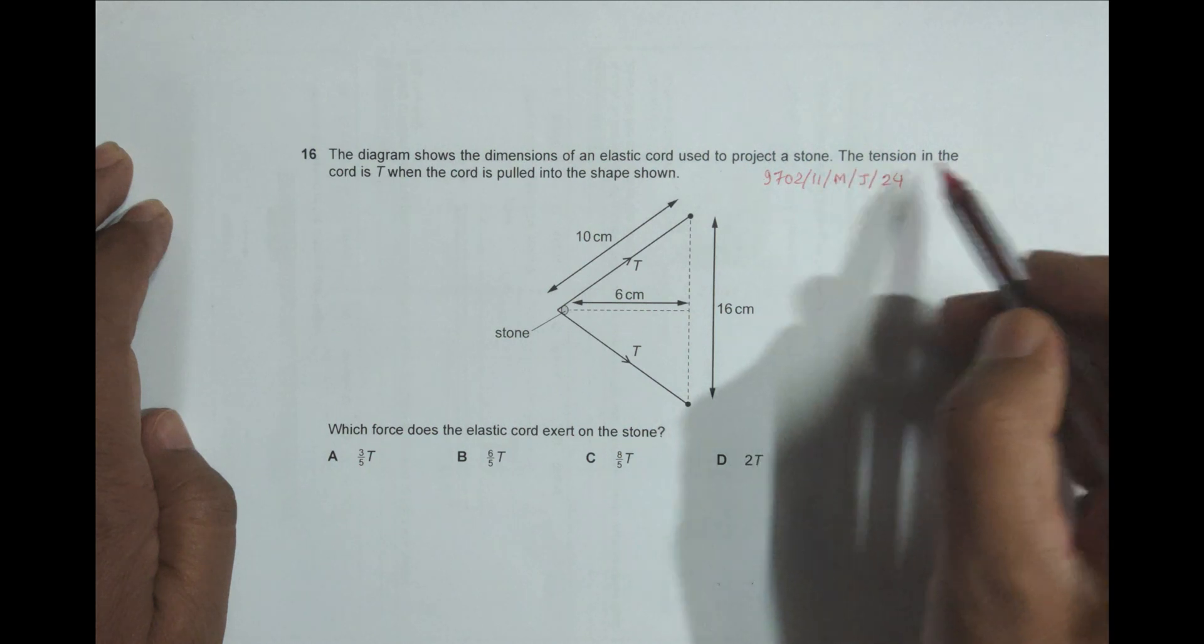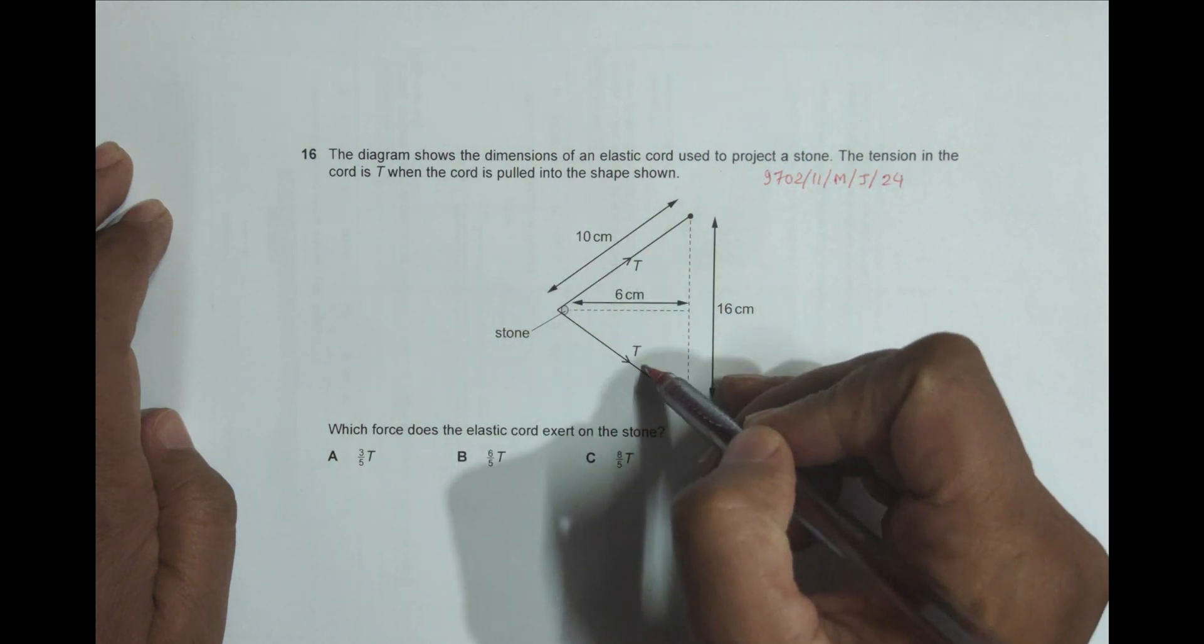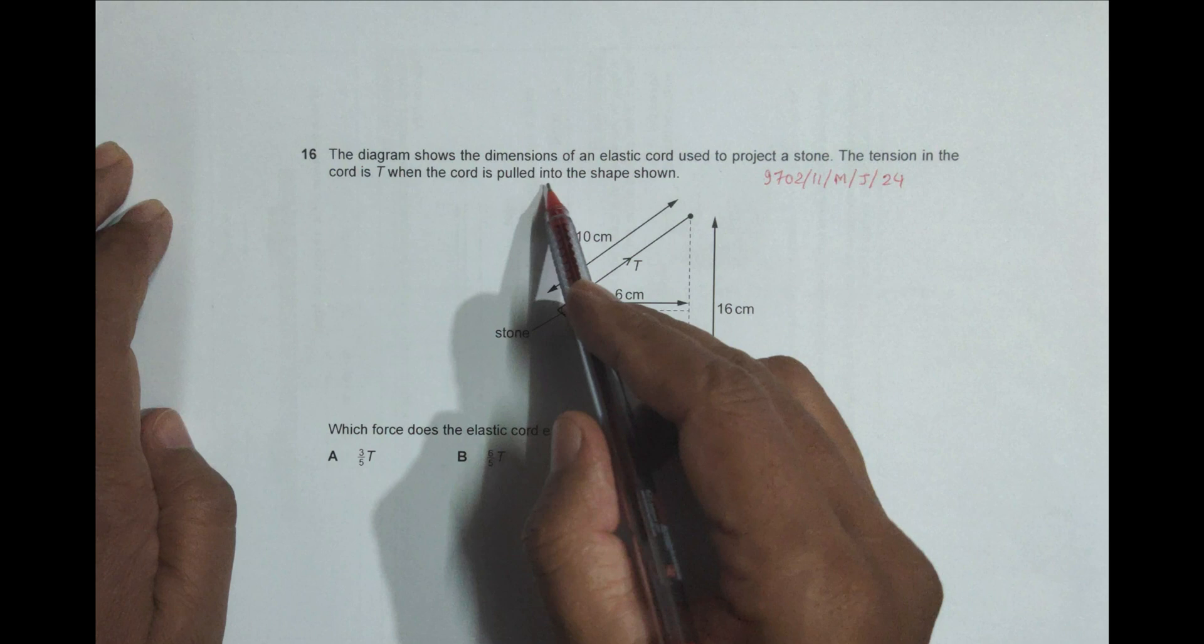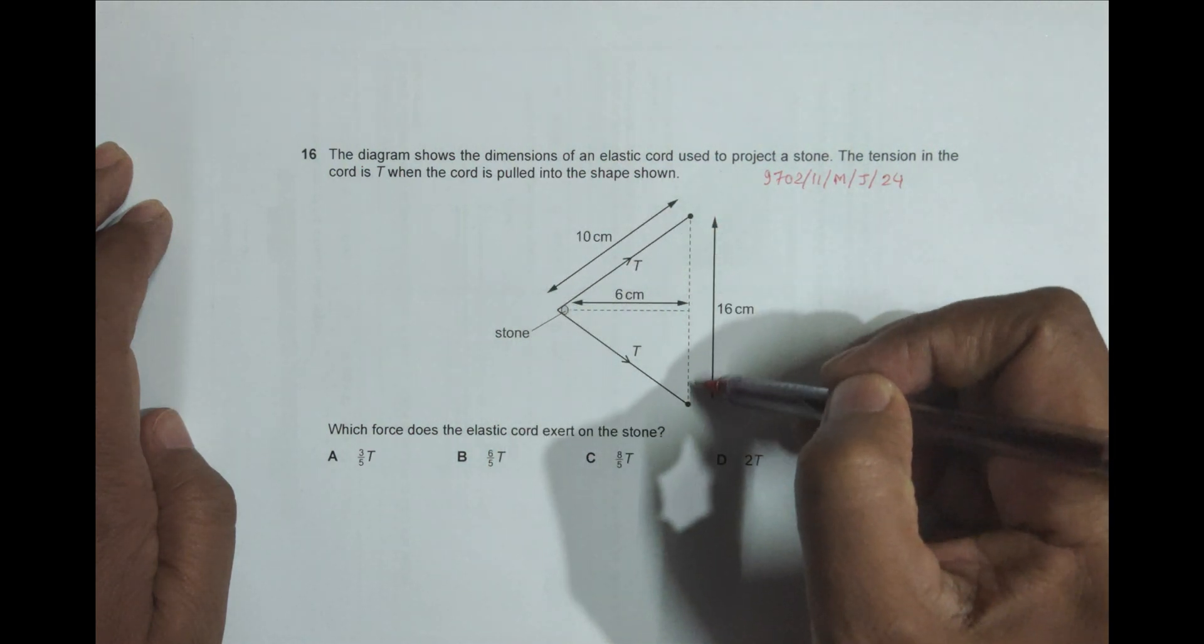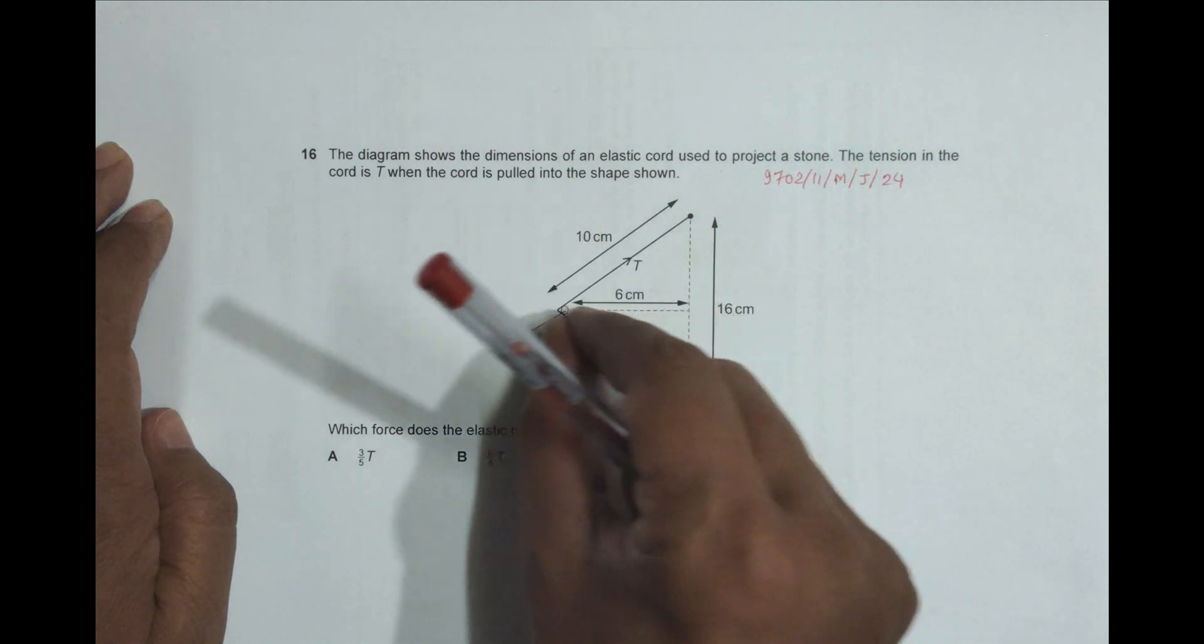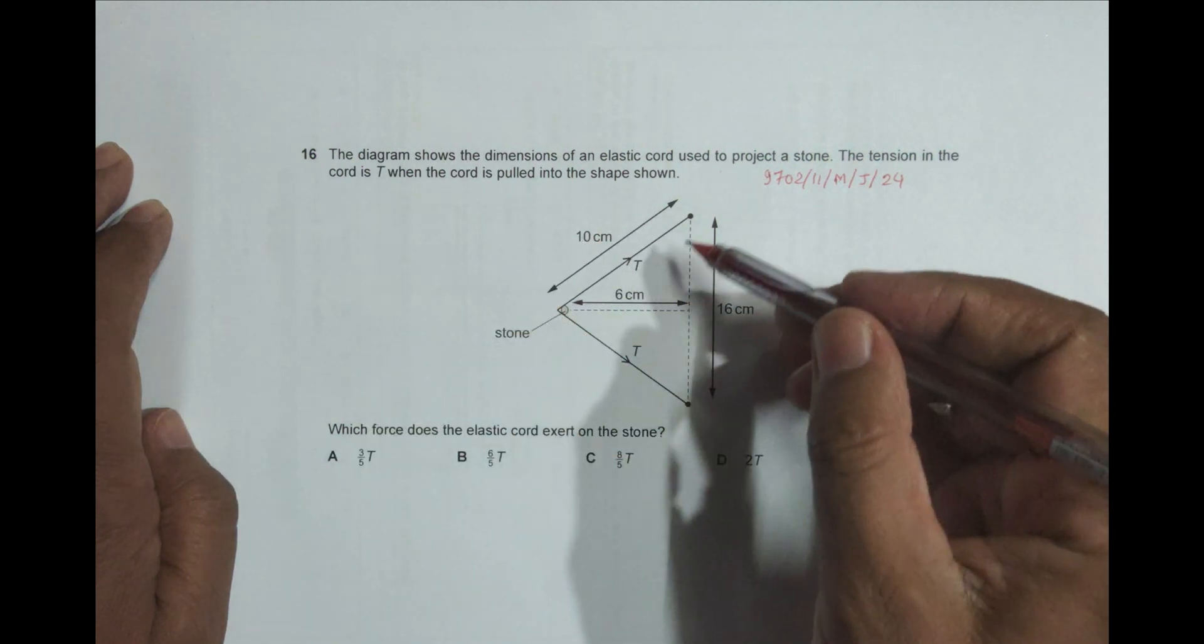This is the stone. The tension in the cord is T when the cord is pulled into the shape shown. The cord should have been somewhat like this in the beginning. We pull it like this, so that's why the structure is like this.